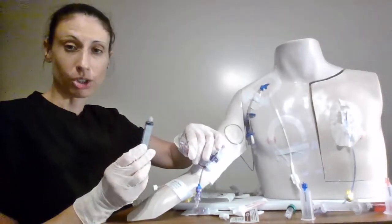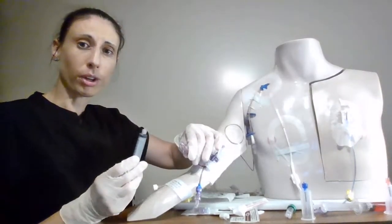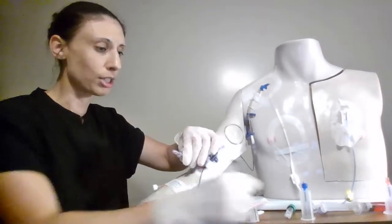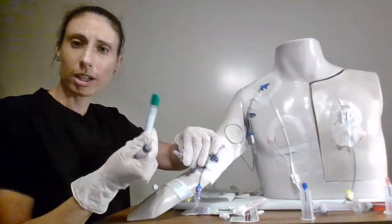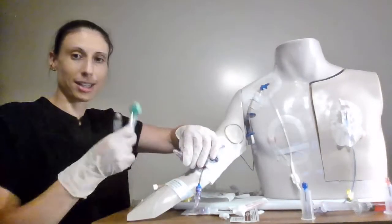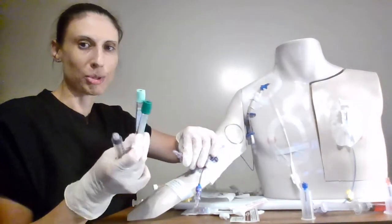So we would take a 10 cc syringe. You could use a smaller syringe if you want to. It depends how much blood work you're taking. So if you were only taking say one tube this tube needs 4 mLs so I could use a 5 mL syringe. If I'm taking two tubes say these sizes I would probably need about 10 cc's.